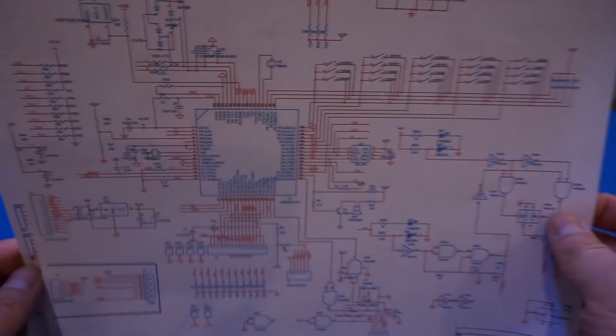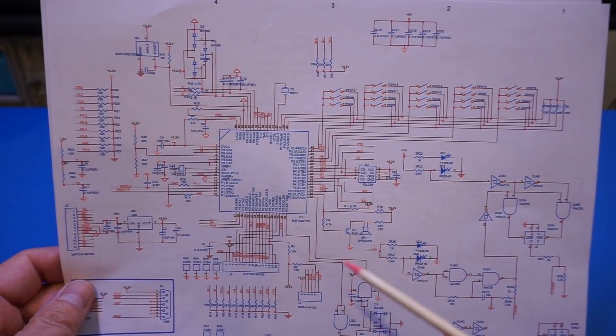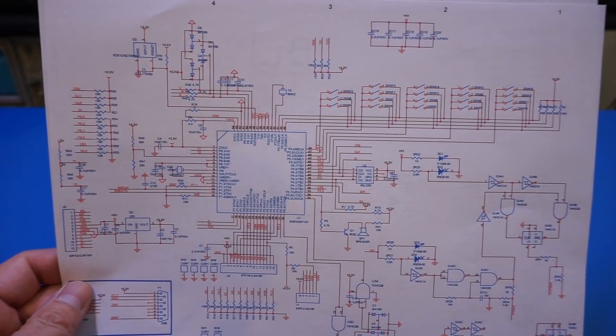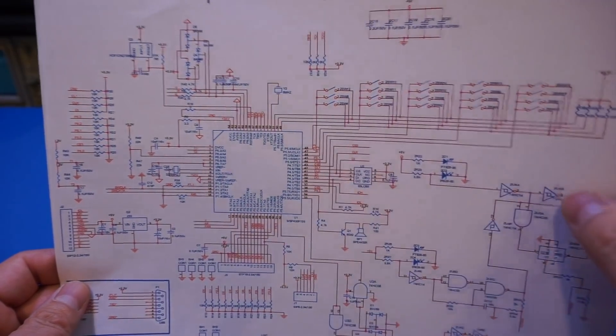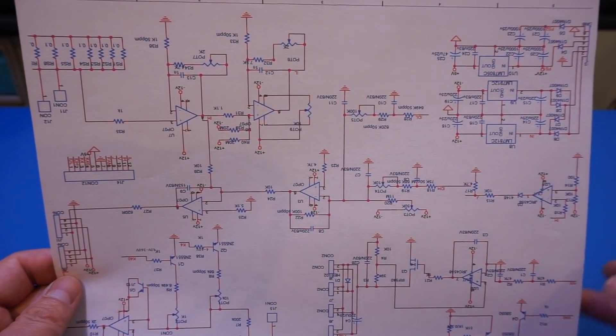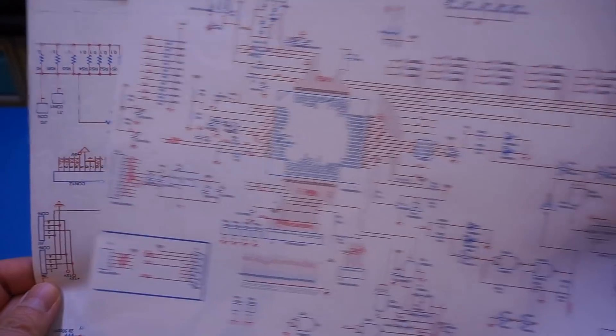And as you can see it's not that complicated but the brain of this electronic load is a MSP430F135, so that's a MSP series TI microcontroller and then we have a bunch of op amps. So we will take a look at the details when we open this unit up.